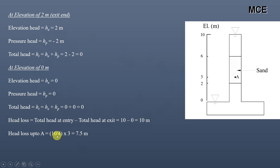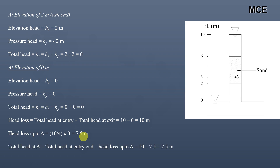The head loss up to point A can be calculated using the theory of proportions. The total head loss in the soil sample is 10 meters. Since the total length of the soil sample is 4 meters and the distance from the entry end to point A is 3 meters, the head loss up to A will be 10 divided by 4, multiplied by 3, which equals 7.5 meters. Total head at point A equals total head at entry minus head loss up to A: 10 minus 7.5 equals 2.5 meters.